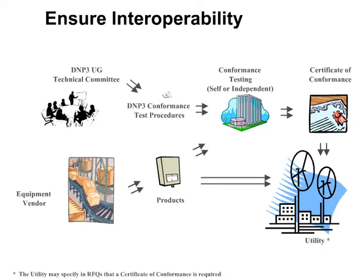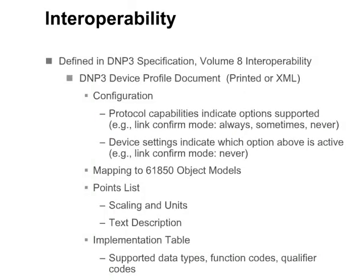Vendors can use the conformance test procedures to test their products and claim D&P3 compliance. The D&P user group website lists products that have completed self-testing and/or independent testing for compliance. The independent test lab may issue a certificate of compliance.